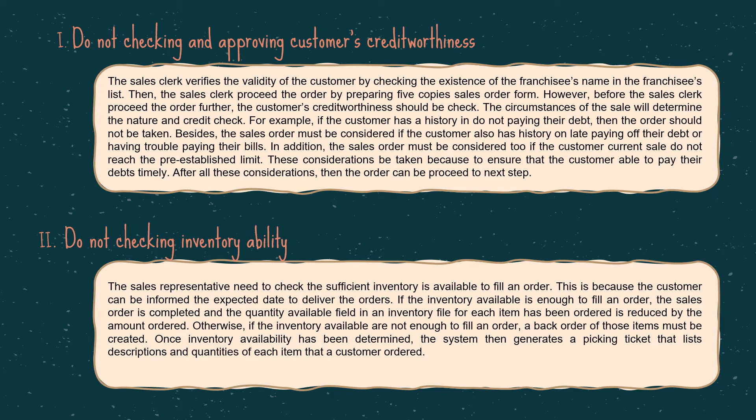The first weakness is not checking and approving the customer's credit worthiness. The sales clerk verifies the validity of customers by only checking whether the franchisee's name exists in the franchisee's list. However, before the sales clerk proceeds the order further, the customer's credit worthiness should be checked. If the customer has a history of not paying their debt, paying late, or having trouble paying their bills, then the customer's order should not be taken. The sales order must also be reconsidered if the customer's current sales do not reach the pre-established credit limit. These considerations must be taken to ensure the customer is able to pay their debt on time.